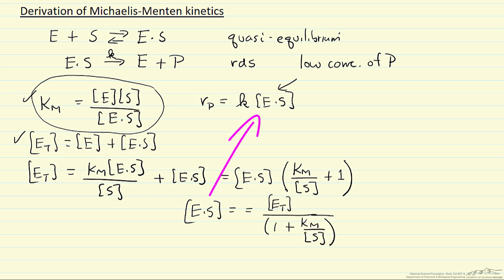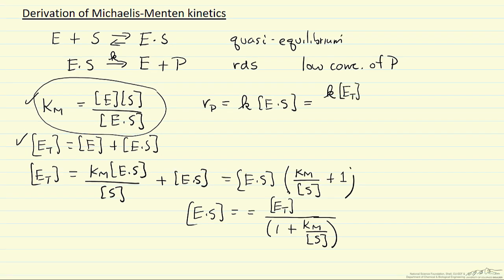So now I have a term I can substitute back into my rate expression, and so the rate becomes K times E total, remember that's a constant, and the denominator looks like that. So what is the normal convention? The normal convention is we call this term Vmax, the maximum rate. K is a constant at a given temperature, and ET, total enzyme concentration in a given system is constant.